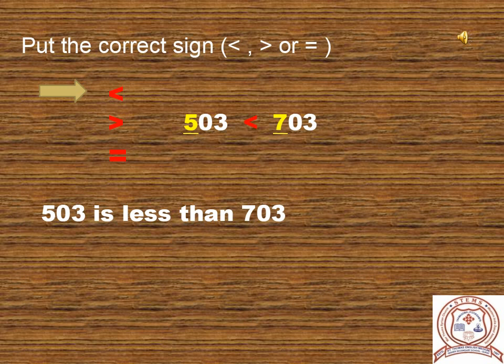Let's see one more example: 503 and 703. Can you find out which number is smaller? Here, 503 is smaller than 703, as the hundreds place value of 503 is smaller than the hundreds place value of 703. So 503 is smaller than 703.